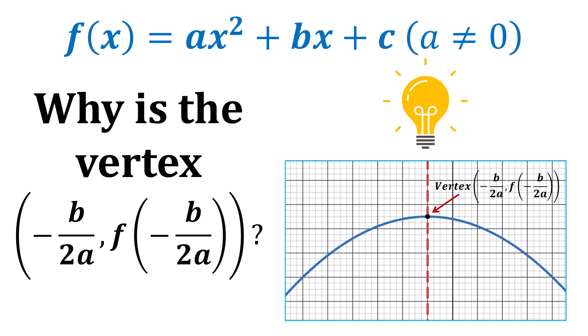Have you ever wondered why the vertex of a quadratic function in the form of f(x) = ax² + bx + c is the ordered pair (-b/2a, f(-b/2a))? If you have, this lesson is for you.